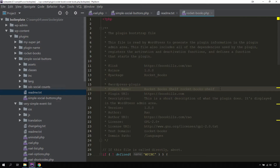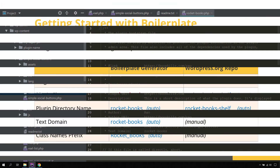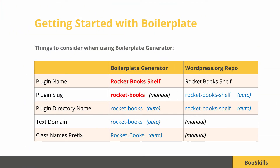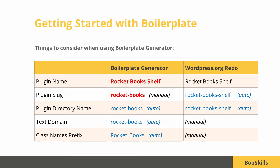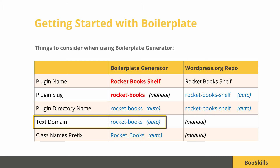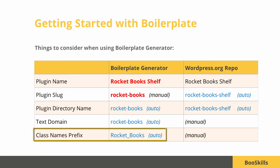To understand the problems clearly, let's recap. The boilerplate generator provides two input fields: one for plugin name and one for plugin slug. The plugin generated through plugin boilerplate uses the plugin slug as a base — it uses this plugin slug to create the plugin directory name, plugin text domain, and class name prefixes. Whereas WordPress.org uses the plugin name to create the URL slug and its directory name.